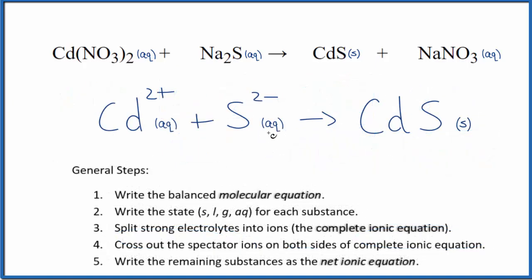So this is the balanced net ionic equation for cadmium nitrate plus sodium sulfide. Note that charges are balanced. We have two plus and two minus, that gives us a net charge of zero. Over here, CdS is neutral, net charge of zero. If you count the atoms up, they're balanced too.